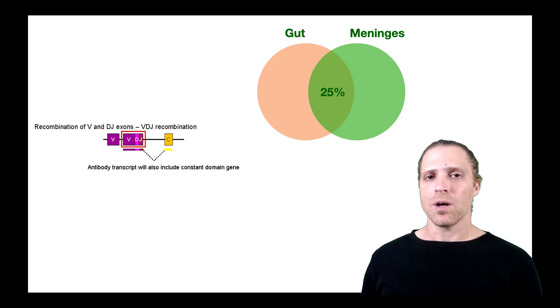And this suggested to the authors that most of the B cells that are present in the meninges are first differentiating in the gut and only then they migrate to the meninges.